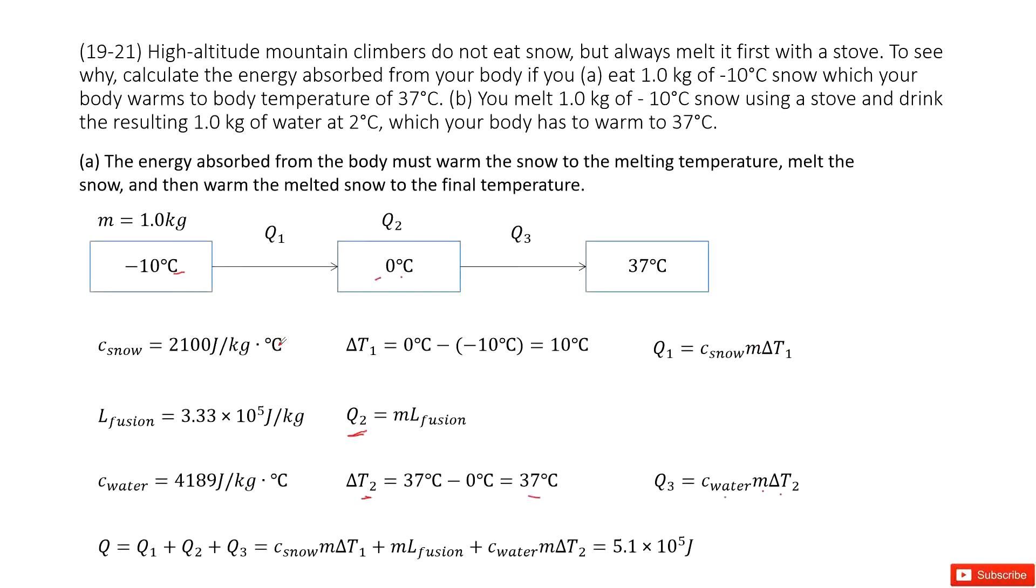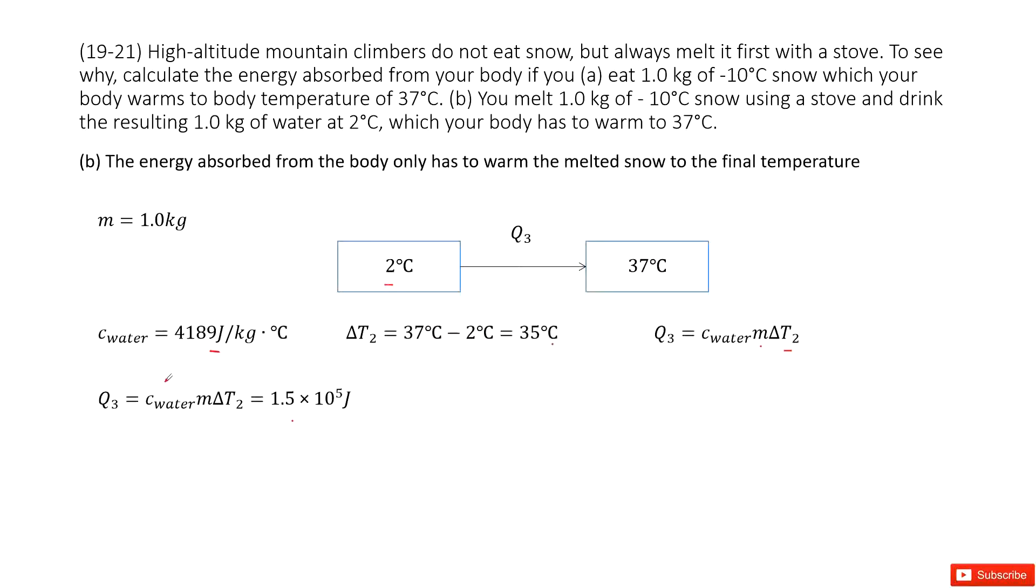So of course, for the climbers, they want to consume less energy. They will select B. In case B they just spend less energy on this heat. Thank you.